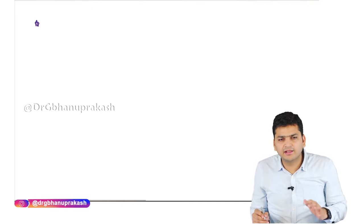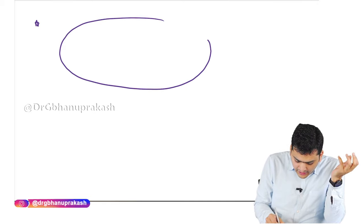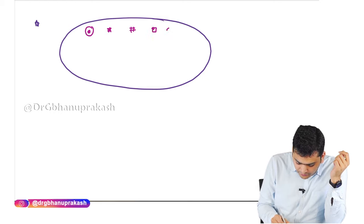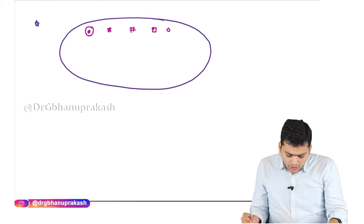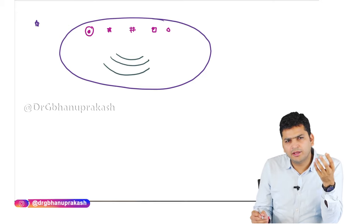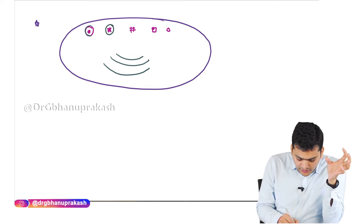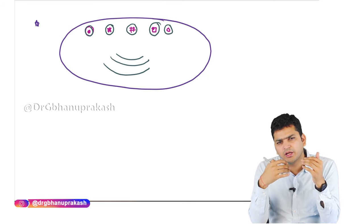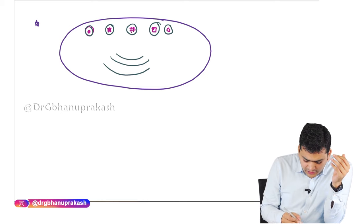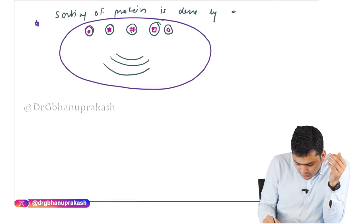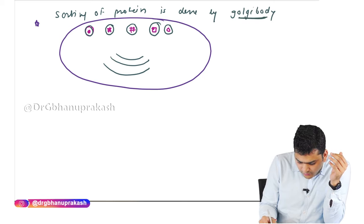A cell is continuously producing different types of proteins — for example, protein A, protein B, protein C, and so on. How are these proteins differentiated from one another? There is an organelle called the Golgi body. The Golgi body makes vesicles and packs these different proteins into different vesicles. This is a kind of sorting of protein, and this sorting of protein is done by the Golgi body.